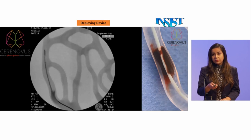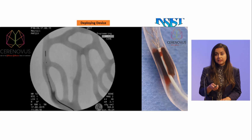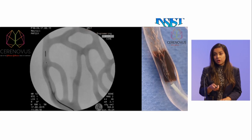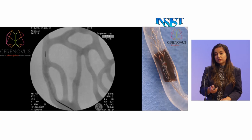Before the thrombectomy procedure it is very important that the device is placed correctly in position. Here you see an actual scan of this model on the left, and on the right you see what actually happens in the vessel. When this embo trap device opens, the struts engage with the clot and that engagement holds the clot in place, so when the device is pulled back the clot also moves.